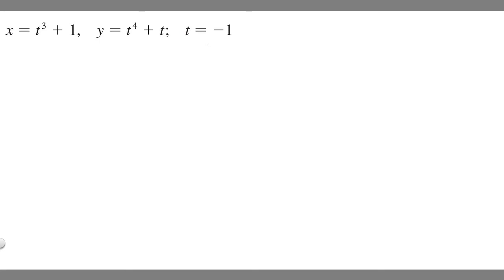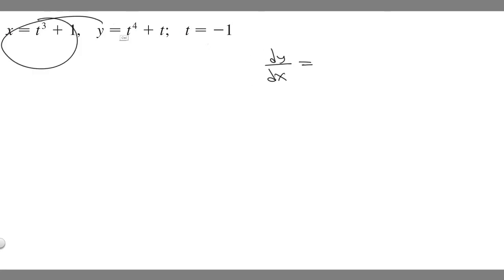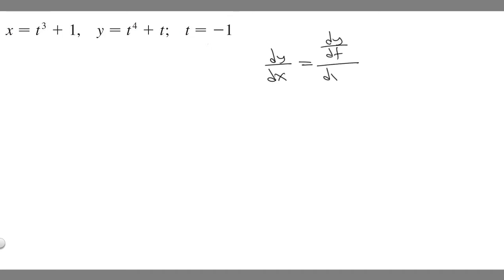The first step is to find the slope, and the way we're going to do that is by finding dy/dx. Notice how we're given two different equations here. dy/dx is essentially equal to dy/dt over dx/dt.